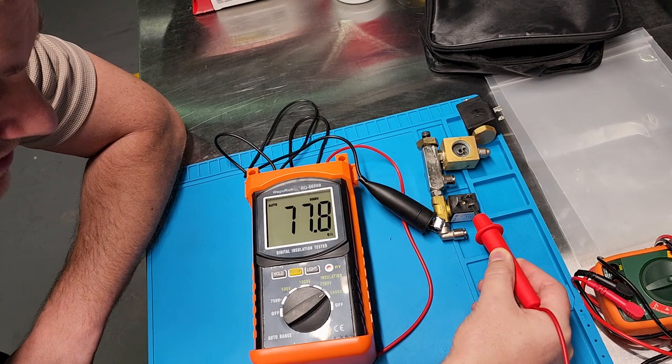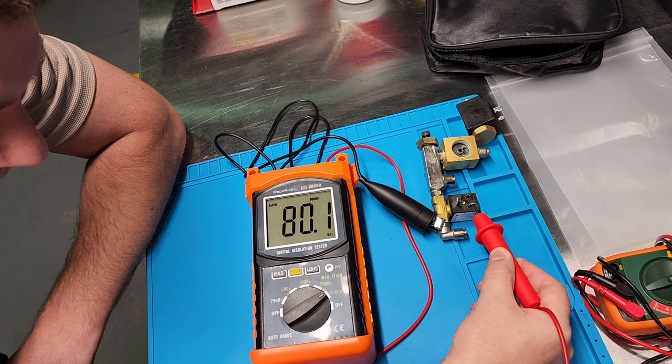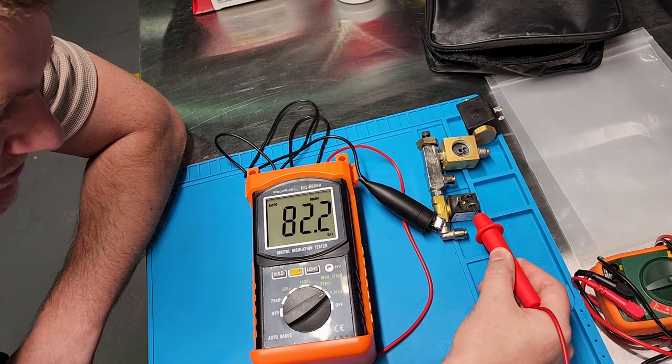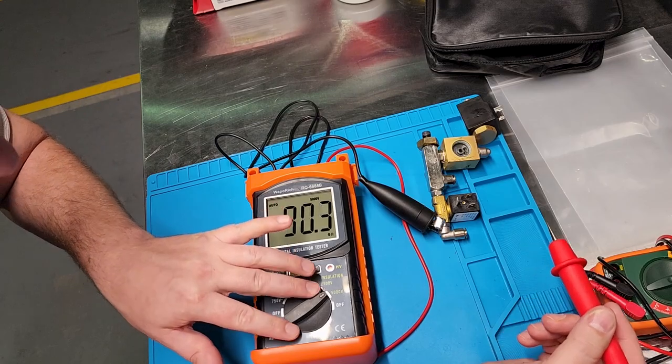You can see the number is going up and up and up. That's indicative that there is nothing there, nothing whatsoever. And what this meter will do is it'll keep on going up until it eventually says I got nothing. So that is a known good coil at 5,000 volts.